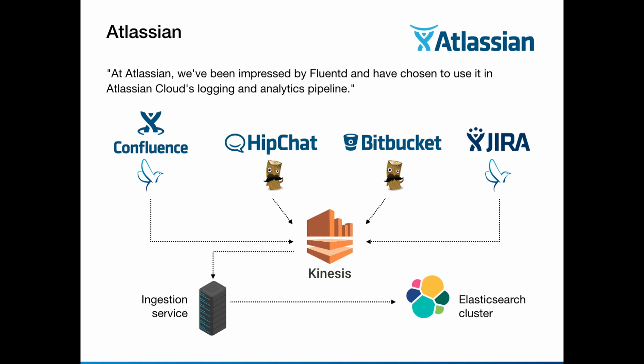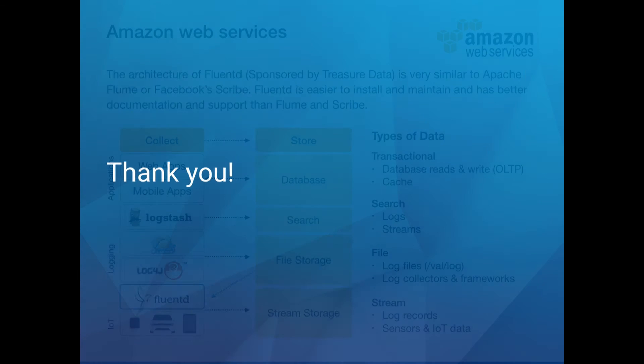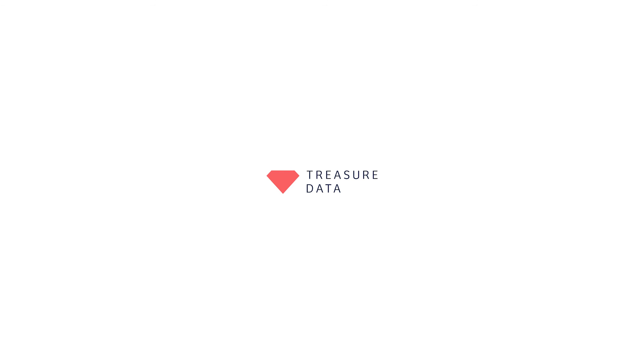By the way, Fluentd's core is written in C, which is fast. The plugins are written in Ruby, so we can take advantage of flexible text processing. Amazon Web Services also promotes the use of Fluentd. The architecture of Fluentd sponsored by Treasure Data is very similar to Facebook's Scribe or Flume. Fluentd is easier to install and maintain and has better documentation and support than Scribe and Flume. Thank you very much — if you have questions, please ask me.